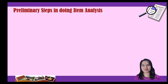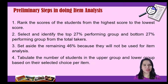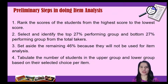I presented the various preliminary steps in doing item analysis. First, we ranked the scores of the students from highest to lowest score. Second, we select and identify the top 27% performing group and the bottom 27% performing from the total takers. Third, we set aside the remaining 46% because they will not be used for item analysis. Fourth, we tabulate the number of students in the upper group and the lower group based on the selected choice per item.